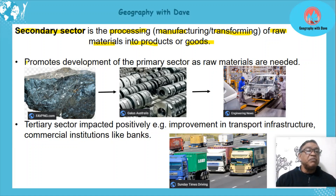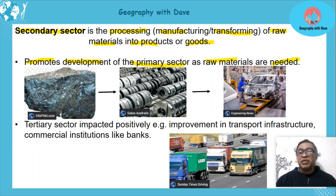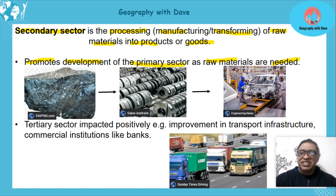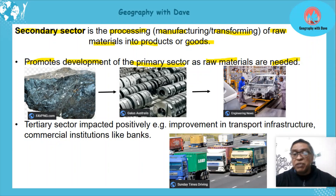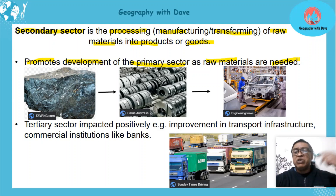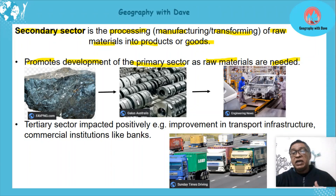The first thing is that the secondary sector promotes the development of the primary sector, because raw materials are needed. The more manufacturing happens in those industries, the greater the demand for raw materials — whether it's agricultural products or mining. There'll be greater production, more mining, more planting of crops, and so on. This promotes economic development, with greater employment and greater outputs.